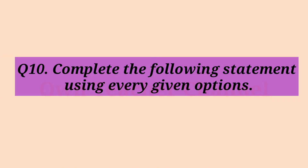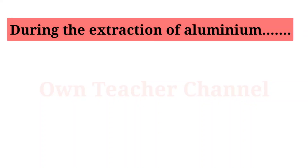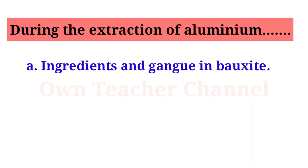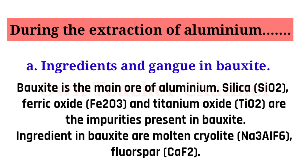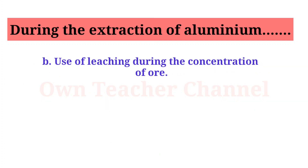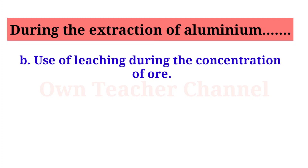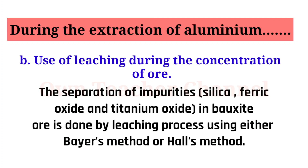Question 10: Complete the following statements. During the extraction of aluminium — Ingredients and gang in bauxite: Bauxite is the main ore of aluminium. Silica, ferric oxide, and titanium oxide are the impurities present in bauxite. Ingredients in bauxite processing are molten cryolite and fluorspar. The separation of impurities in bauxite ore is done by the leaching process using either Bayer's method or Hall's method.